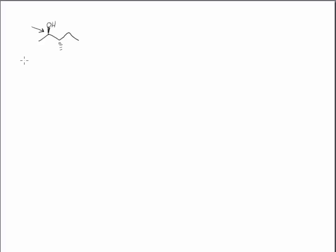Let's get some practice drawing Newman projections. When we're looking at a molecule with the idea that we're going to draw a Newman projection of it, we need to be able to visualize ourselves looking down this arrow here, as though we're looking end on to the paper. We should envision this OH coming up and to the right, and this methyl group going down to the left as we observe the molecule down this arrow.